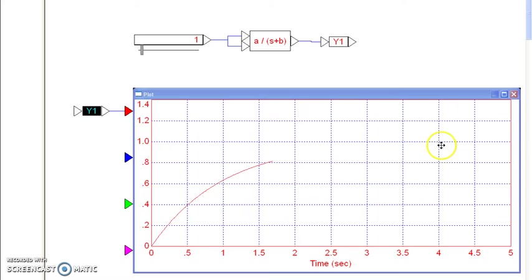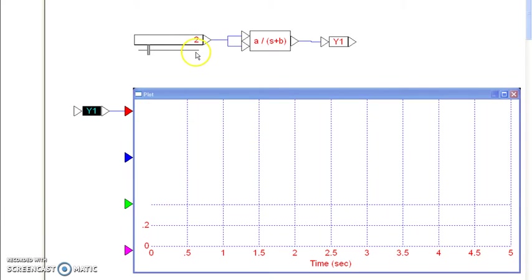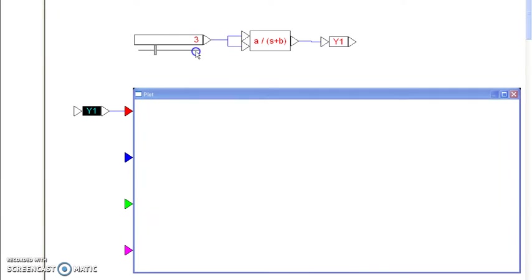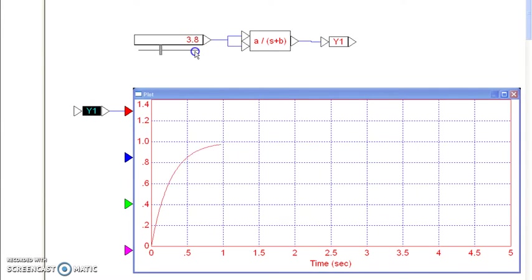If the real part is at minus 1, the settling time is 4 seconds. If the real part goes up to 2, it's now 4 over 2, 2 seconds. When it's at 3, 4 over 3, 1.33 seconds. 4 over 4, about 1 second, and so on.